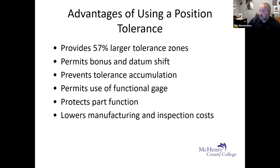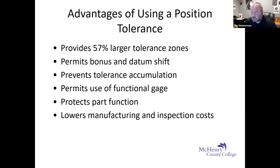One advantage of using a position tolerance zone is that it actually provides a 57% larger tolerance zone than using a standard plus-or-minus tolerance zone. It also permits bonus tolerance and datum shift, which is huge when it comes to assembly. We just ran into a situation today where somebody came to me with a GD&T callout that the customer did not believe had been checked correctly — but it checked out as zero, perfectly.